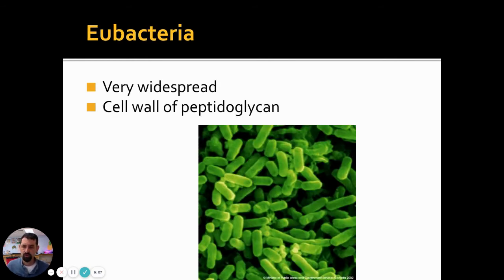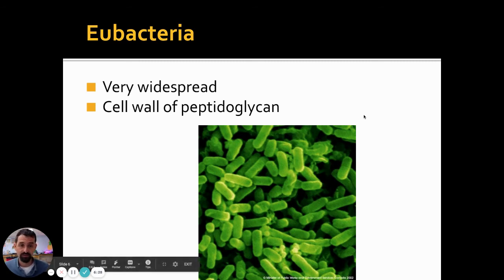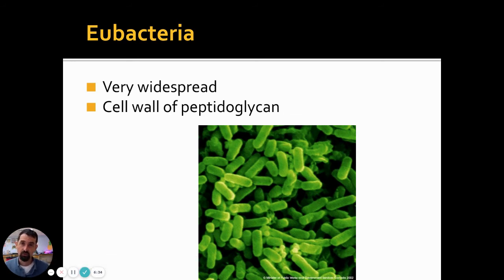The eubacteria, or what I call common bacteria, are very widespread. These are the main types of bacteria we might talk about — E. coli, streptococcus which causes strep throat, lactobacillus used to make yogurt. If you ever see yogurt labeled 'live and active cultures,' that's really bacteria you're eating. Bacteria are also used to make cheese — all different varieties of eubacteria.